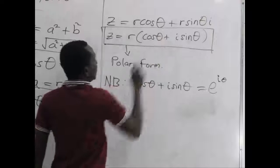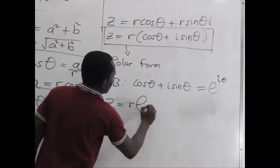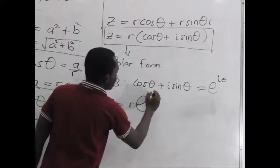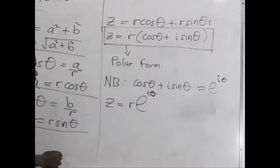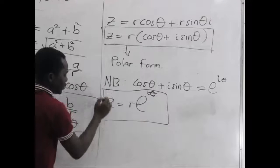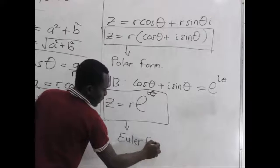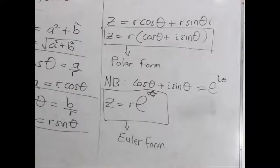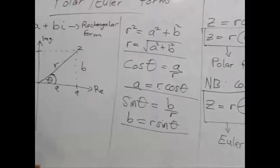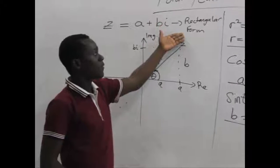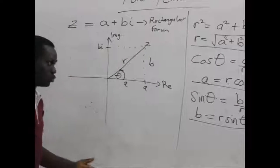So replacing this into the polar form, we can have our Z to be R times e to the power i theta. So this new form of equation is what we call the Euler form of complex numbers. As easy as that. So when you take time, you go through the step-by-step proof, you will be able to establish the relationship between the rectangular form, the polar form, and the Euler form. And this is what we want to do now.